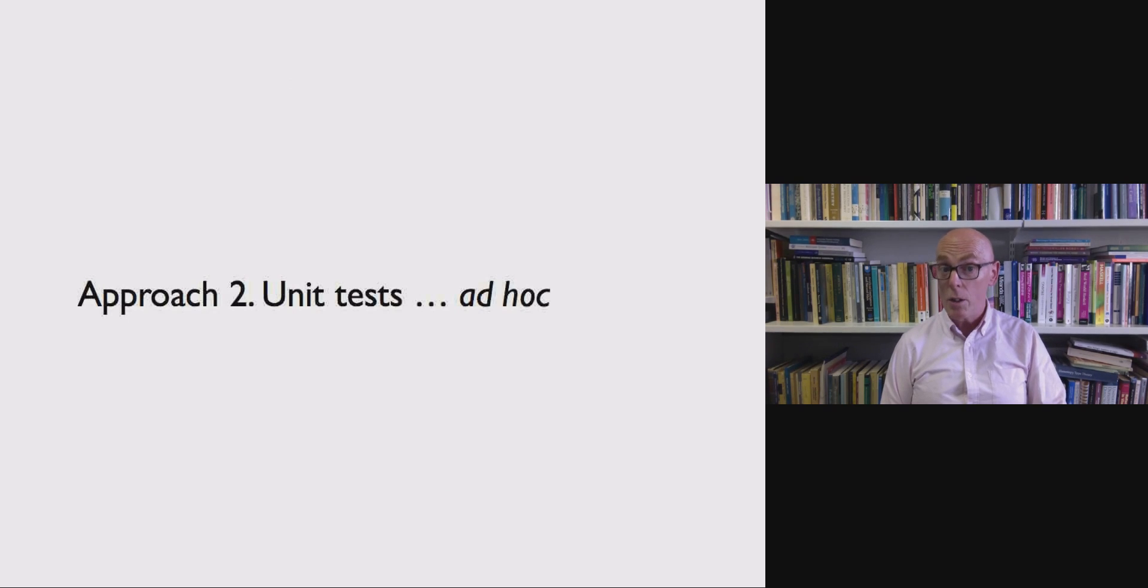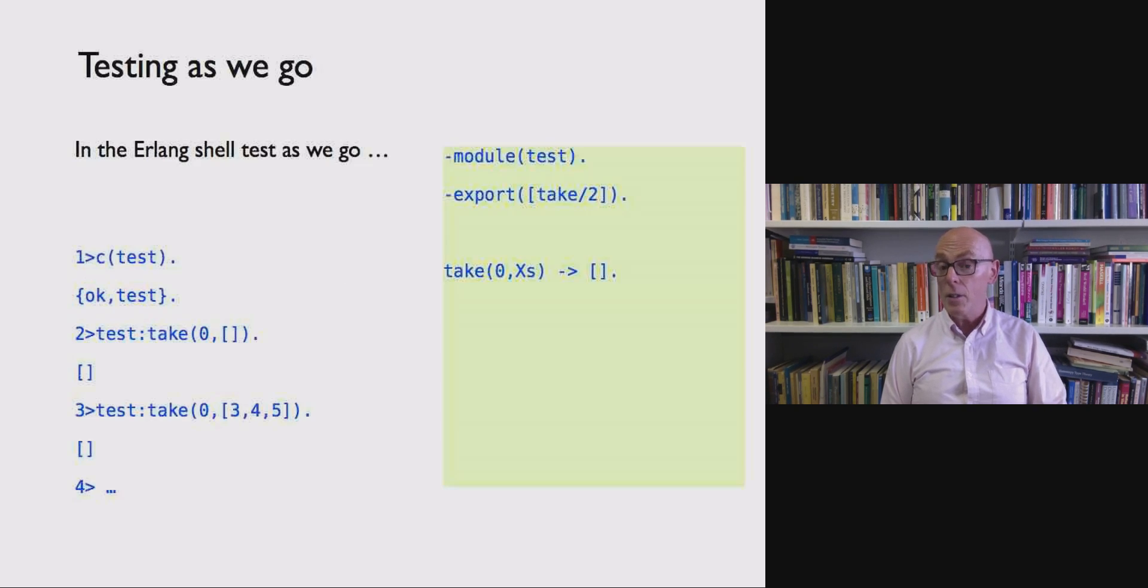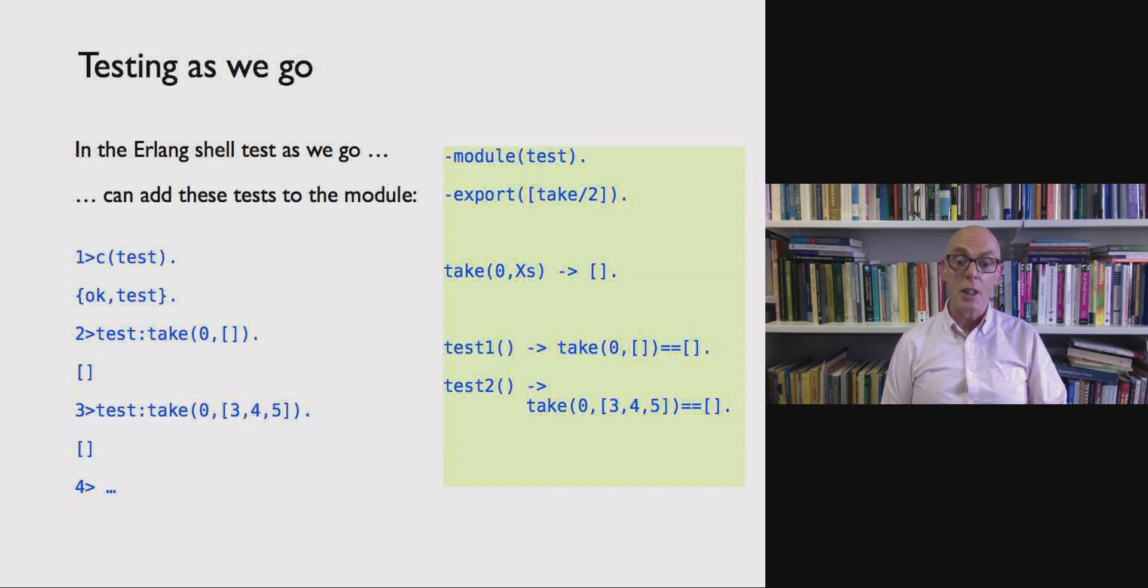But of course we could record them as ad hoc unit tests. So here are the tests again. What we could do is add them as tests to the module and then we'd have test one doing the first comparison, test two doing the second. And then we have recorded what our tests are and then of course we can do regression testing if we were to change or extend the definition of take. So that at least records the tests and then we have to apply the tests by hand by calling test one and test two.